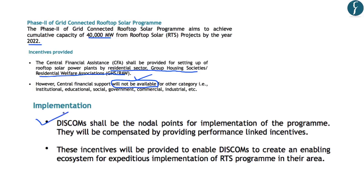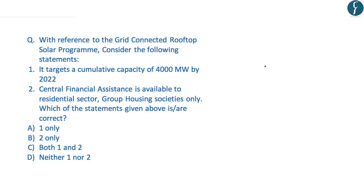DISCOMs are required to incur additional expenditure for implementation in terms of additional manpower, infrastructure, and capacity building, and will be compensated through performance-linked incentives. Key points to note: the expected cumulative capacity is 40,000 megawatts by 2022; central financial assistance is available only to the residential sector, group housing societies, or residential welfare associations; and implementation will be carried out by state electricity distribution companies. Try to answer the practice question from your preliminary examination perspective.